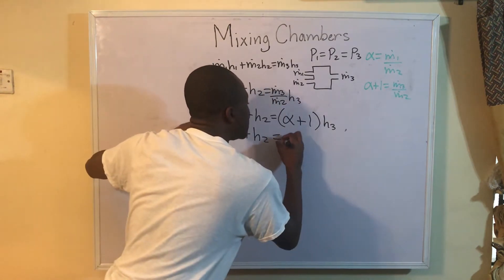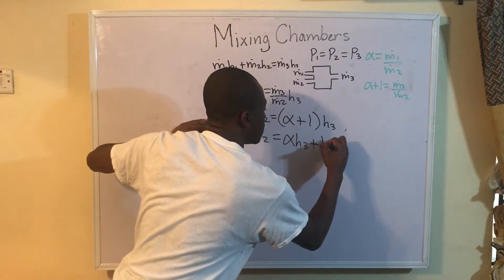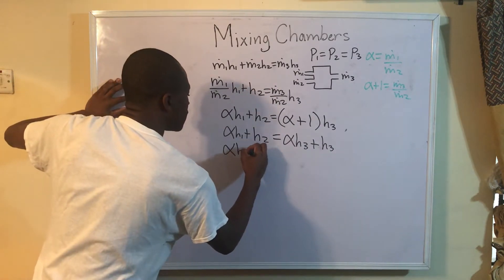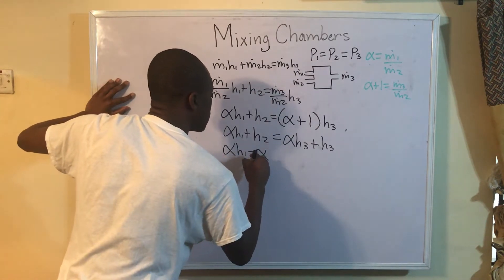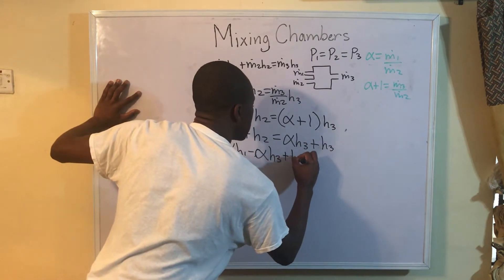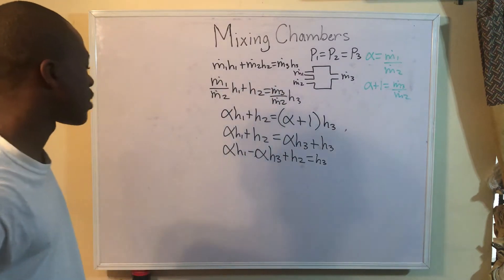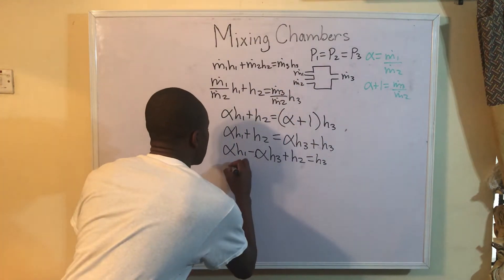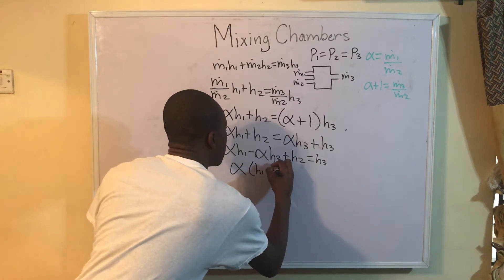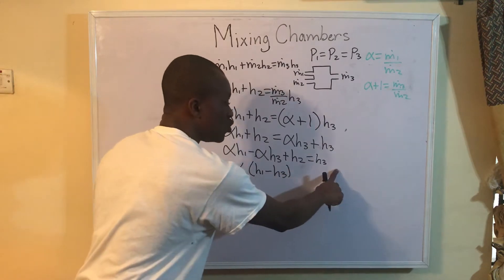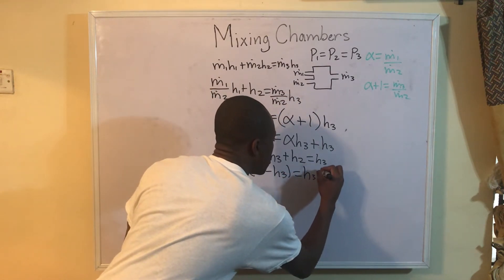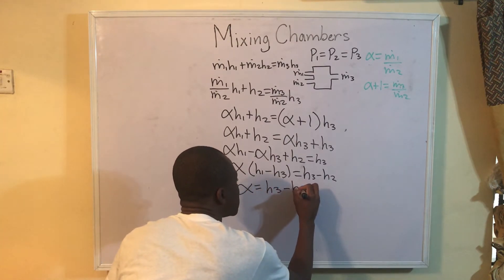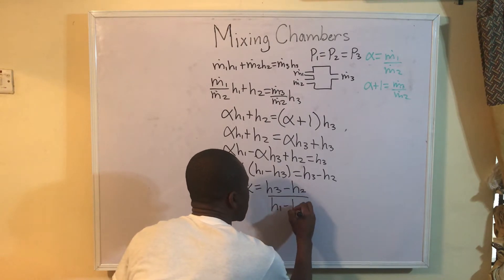Bringing alpha·h3 to the left side and factoring out alpha, I get: alpha·(h1 minus h3) plus h2 equals h3. Subtracting h2 from both sides: alpha·(h1 minus h3) equals h3 minus h2. Solving for alpha: alpha equals (h3 minus h2) all over (h1 minus h3).